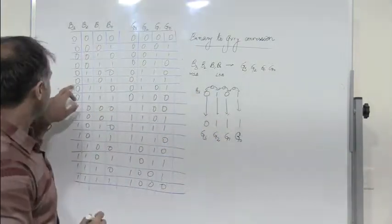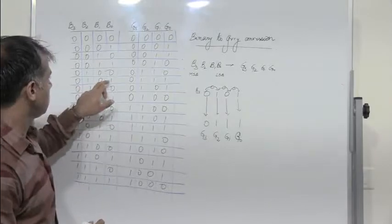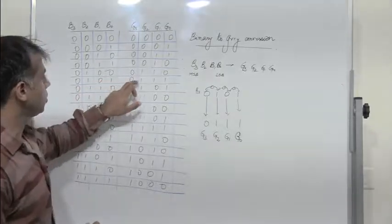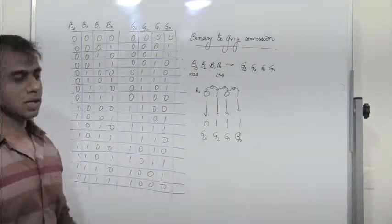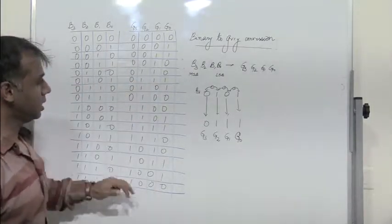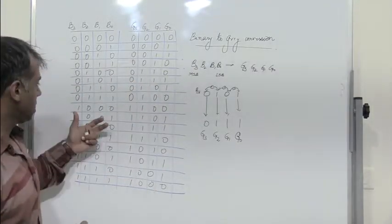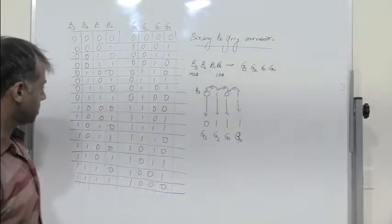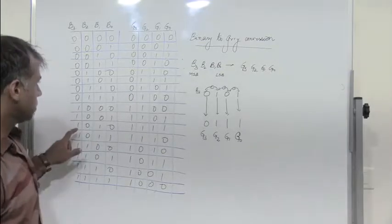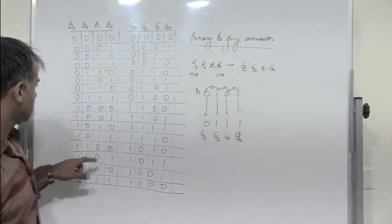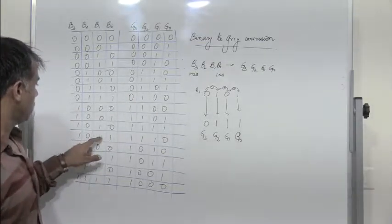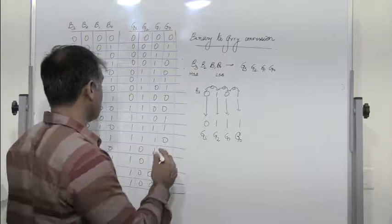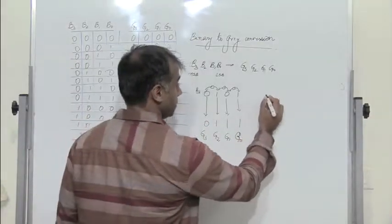So 0, 1, 0, 1 converts to 0, 1, 1, 1. I have already filled in the table. Let's take a few more examples. Let me consider 1, 0, 1, 1.